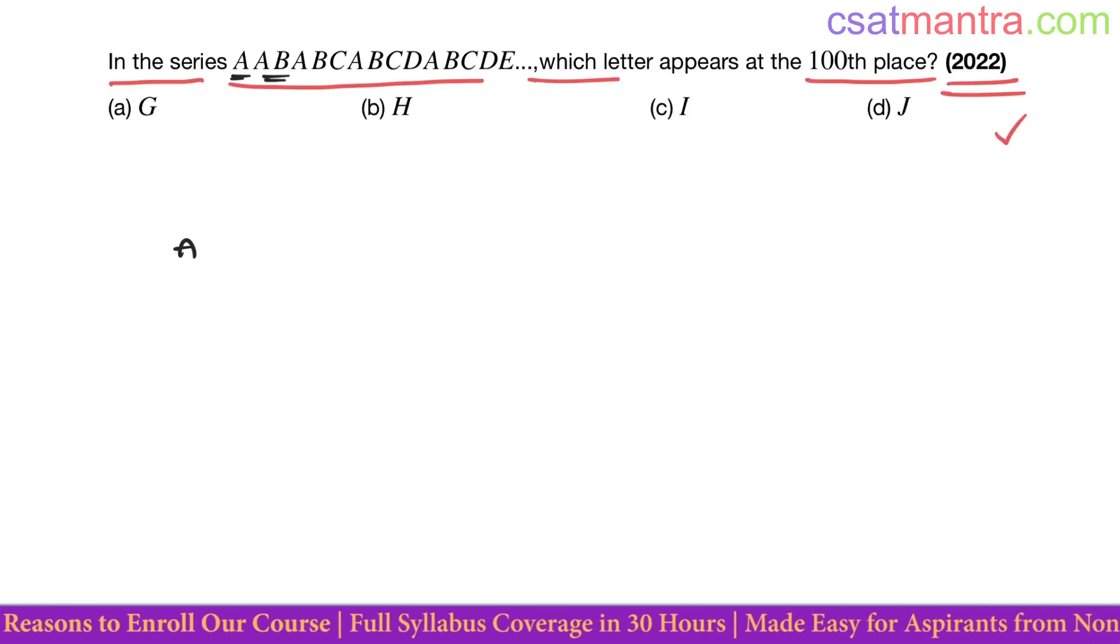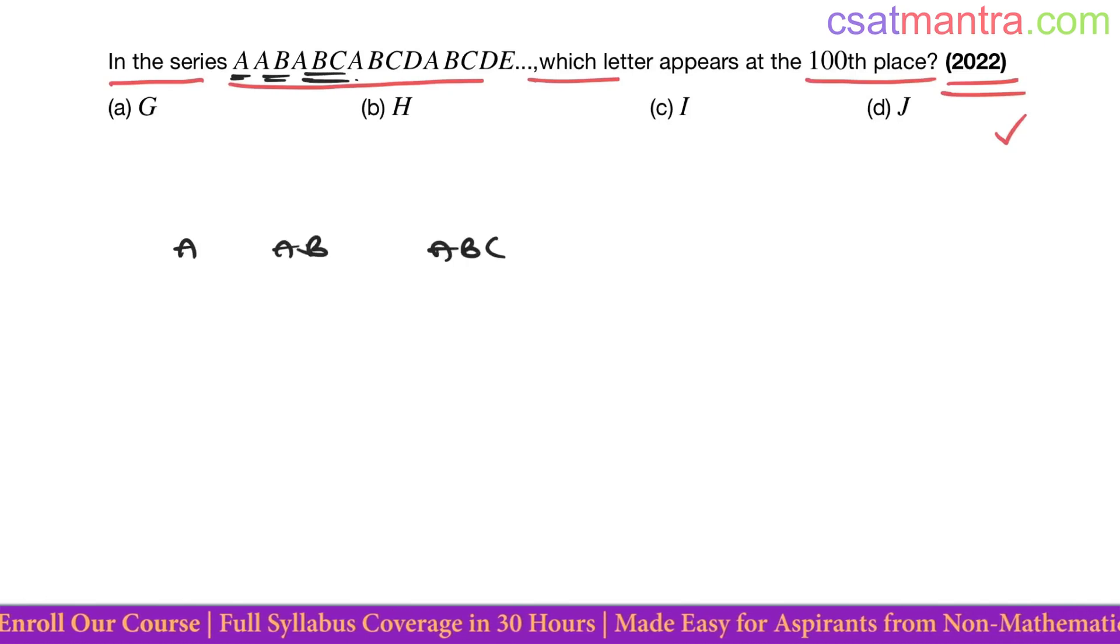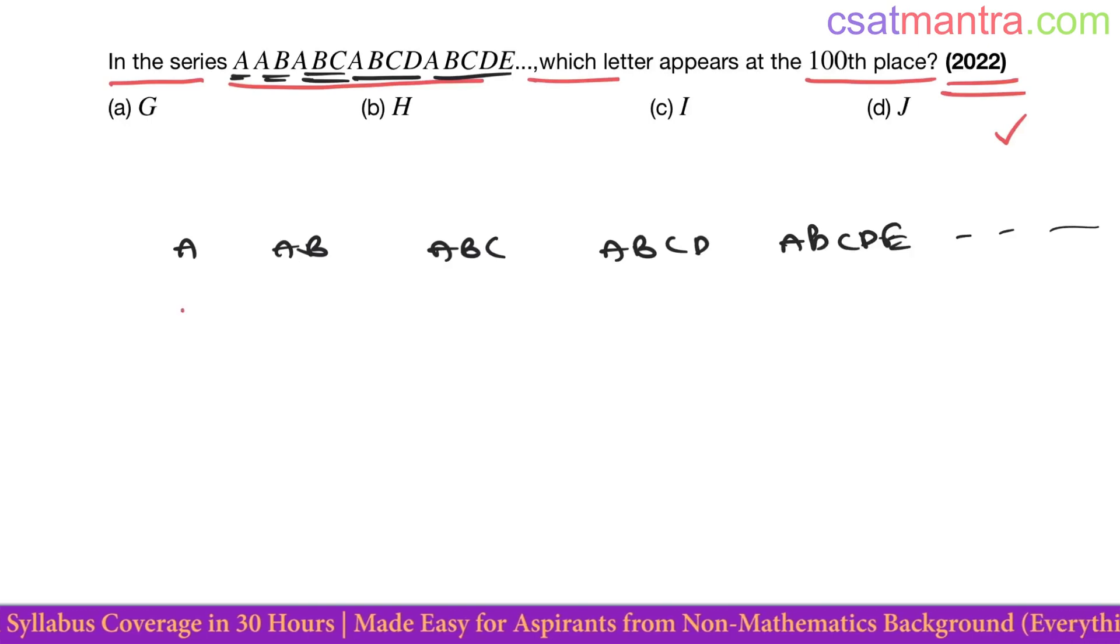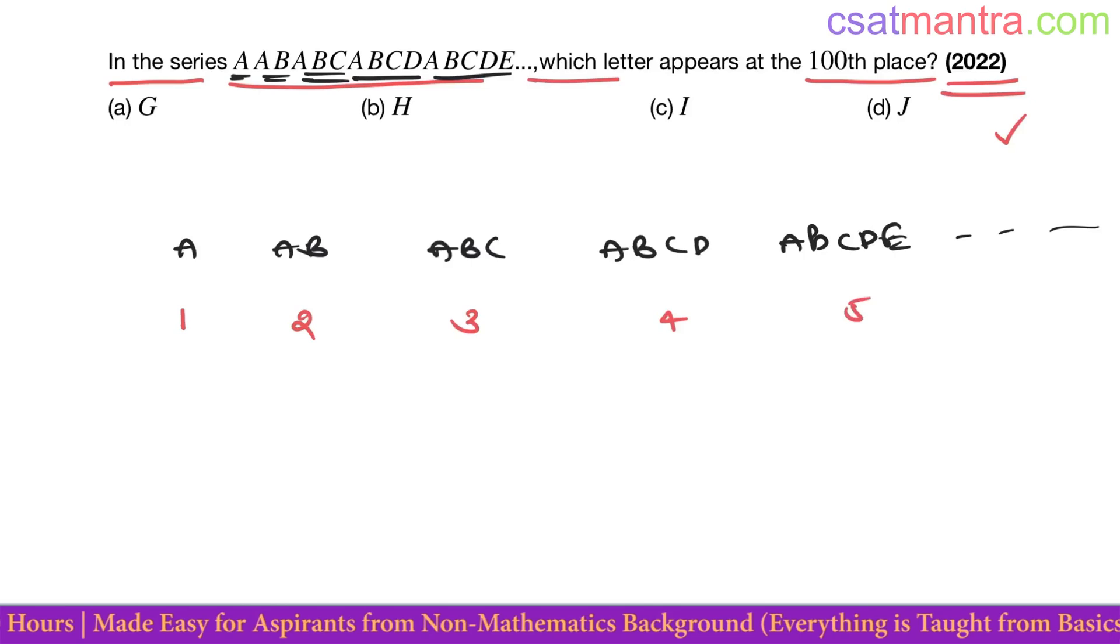We have A, and then AB, ABC, ABCD, ABCDE, like this. Here one letter, two letters, three letters, four, five. Next you would be having six like this. See this is first place.